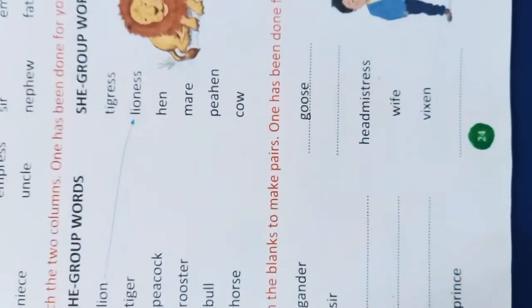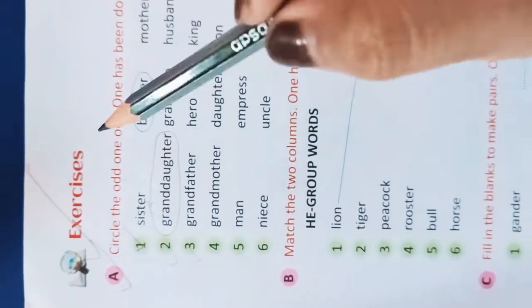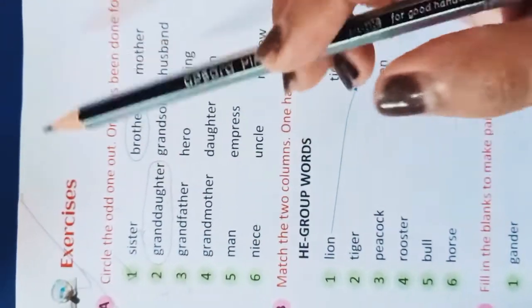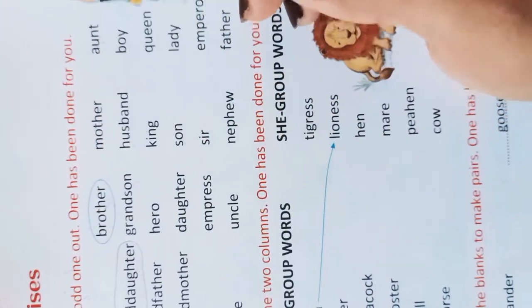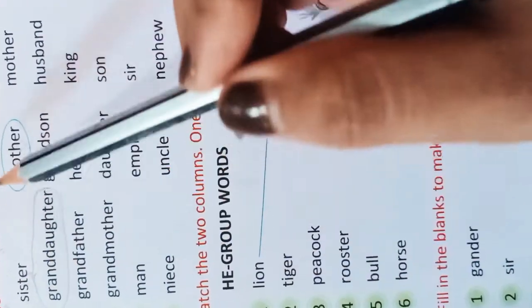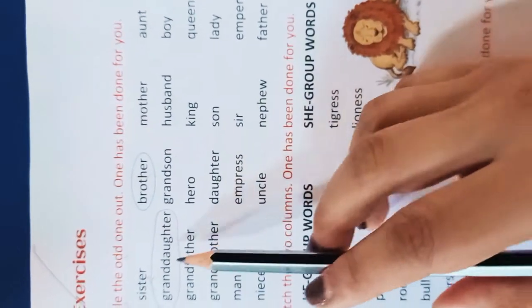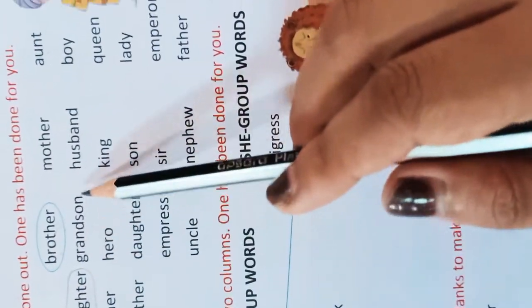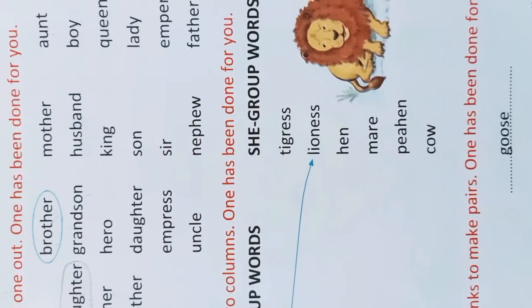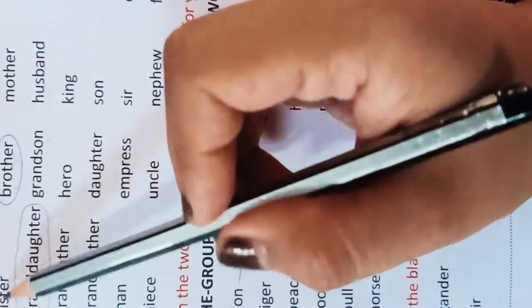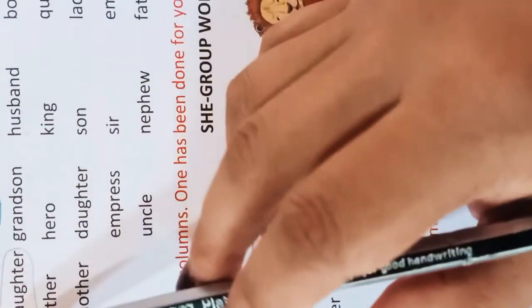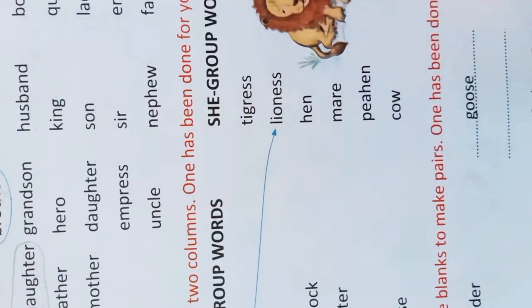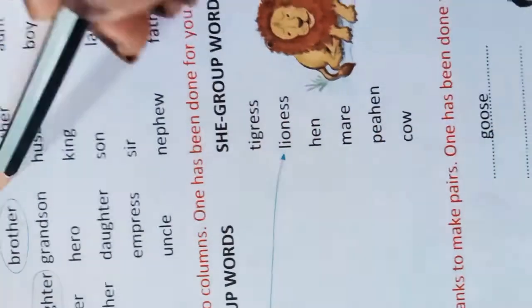Please turn to page number 24. We will do some exercises. The exercise says: circle the odd one out — one has been done for you. In number one: sister, brother, mother, aunt — sister, mother, and aunt come in the She group, but brother comes in the He group, so brother is the odd one.